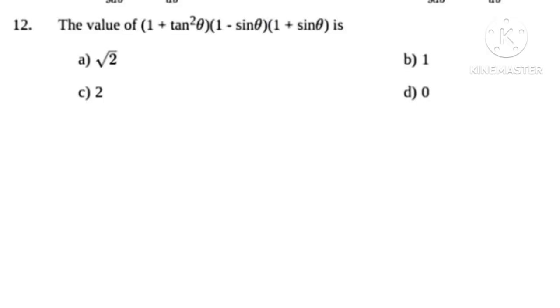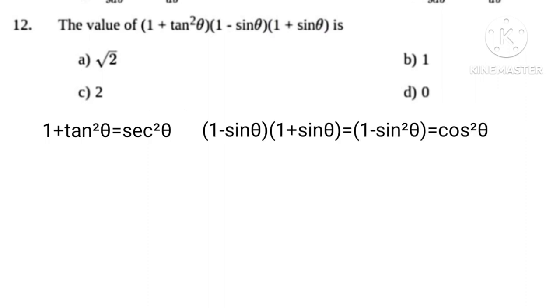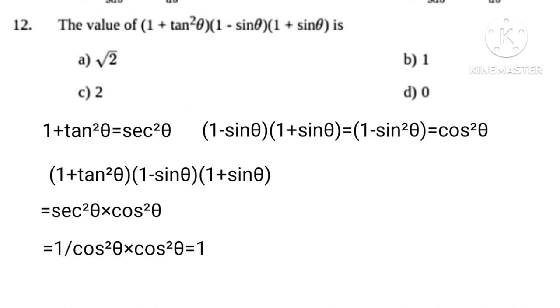Using formula 1 plus tan squared theta equals sec squared theta, and 1 minus sine theta times 1 plus sine theta equals 1 minus sine squared theta equals cos squared theta. We get 1 plus tan squared theta times 1 minus sine theta times 1 plus sine theta equals sec squared theta times cos squared theta equals 1 upon cos squared theta times cos squared theta equals 1.